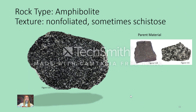Amphibolite is a hornblende-rich rock, and it is often derived from basalt or gabbro. It's in the non-foliated category, but sometimes it can develop a slightly schistose appearance. However, it's important to remember that this rock is non-foliated, and by looking at it, you can clearly see that it has random fabric.